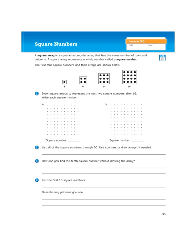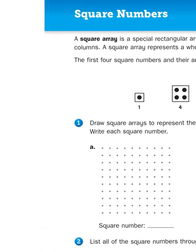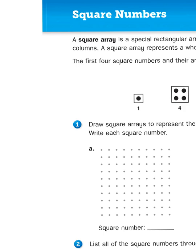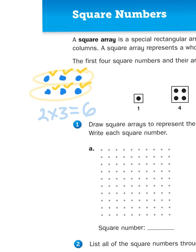It says a square array is a special rectangular array that has the same number of rows and columns. Before we go any further, let's talk about what an array is in the first place. An array is basically a picture or a model of a multiplication or division fact. So if I were to draw two rows with three dots in each row, this would represent the multiplication fact 2 times 3, which gives us a total of 6. If I count the number of dots: 1, 2, 3, 4, 5, 6 — that shows it's true. So an array is just a model that helps us understand multiplication and later division.